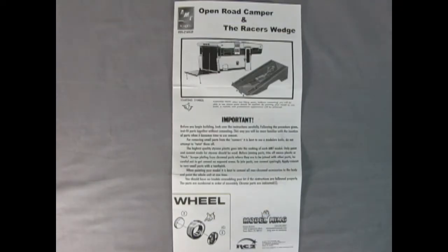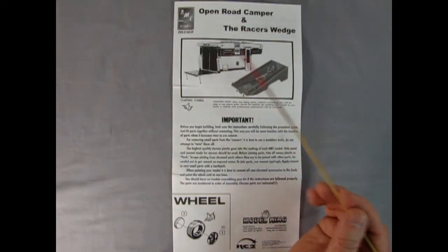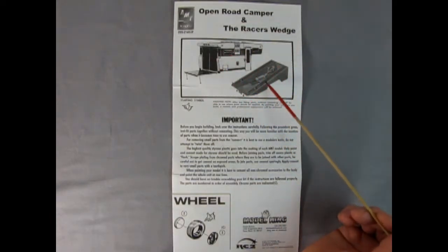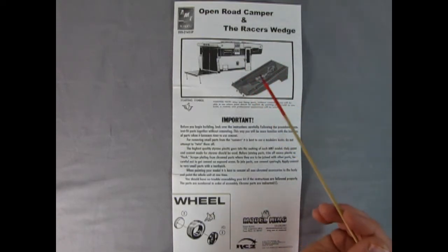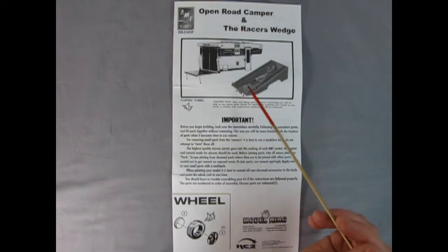Now the best place we can start our tour of our model kit is of course with the instructions. Here we get the Open Road Camper which looks really great and the Racer's Wedge. Both of these can be dropped into different pickup trucks or mounted on the pickup truck chassis. We have our important parts - before you begin building look over the instructions carefully. Down here we have the wheels and tires going together.